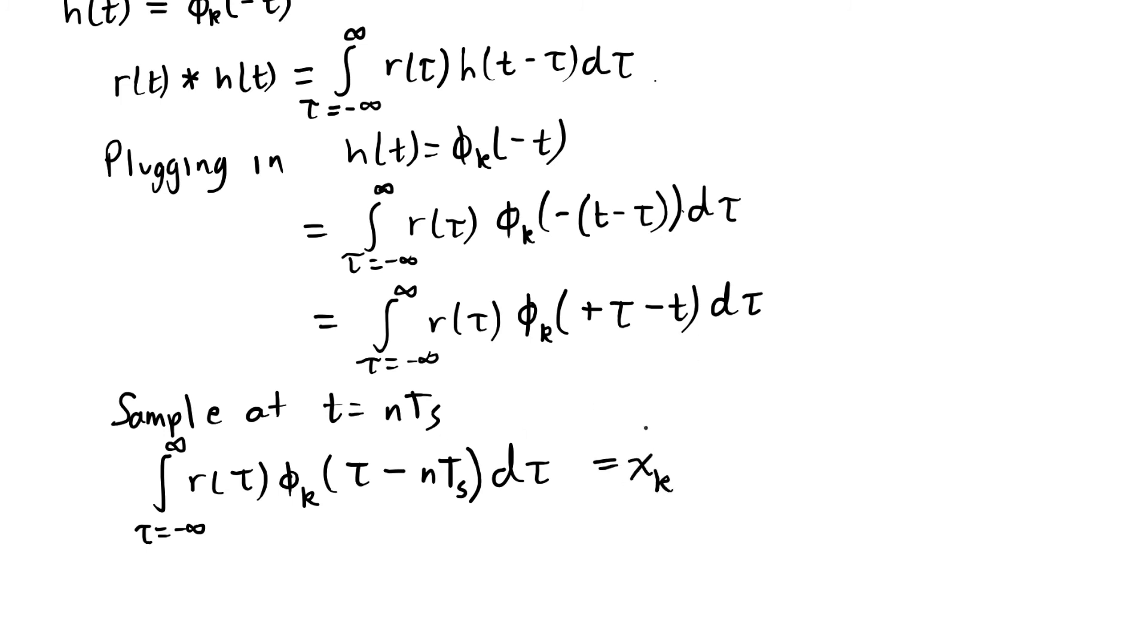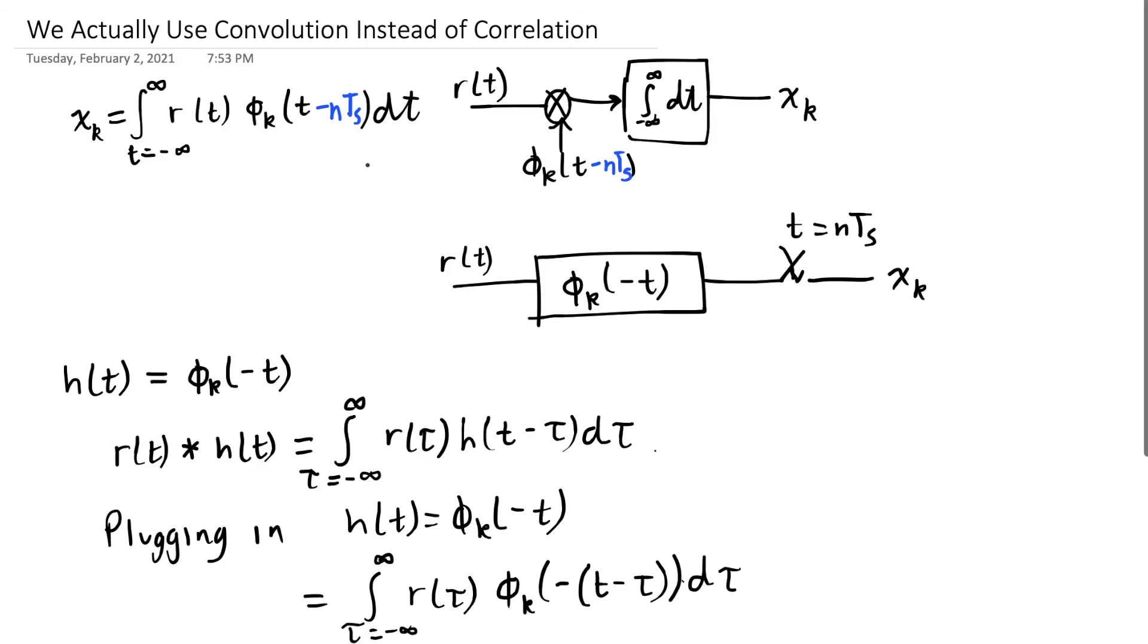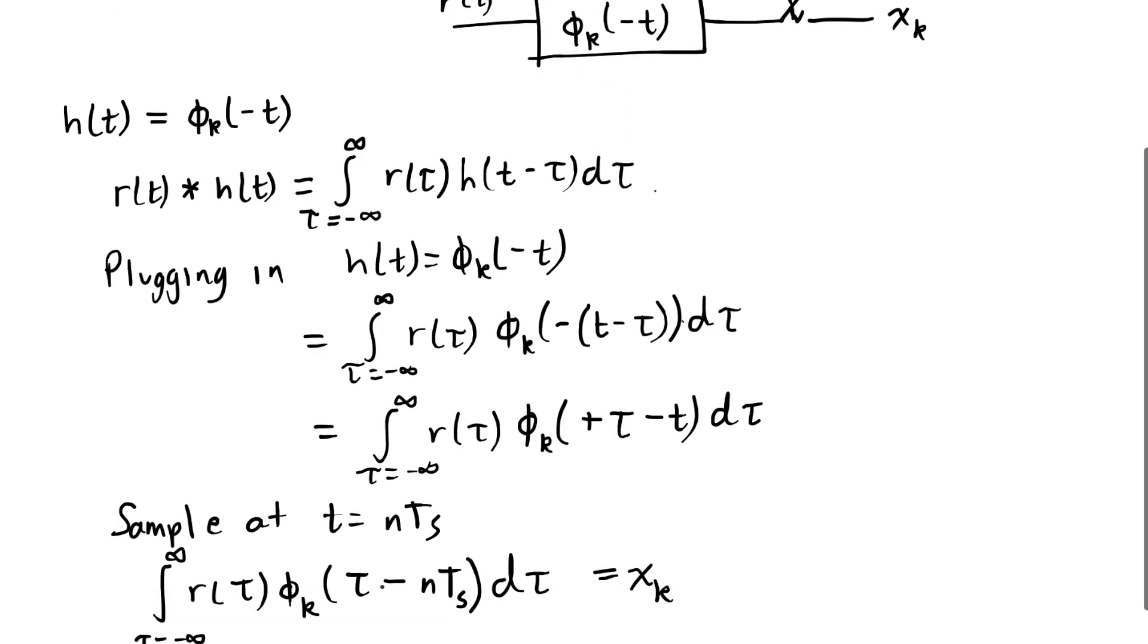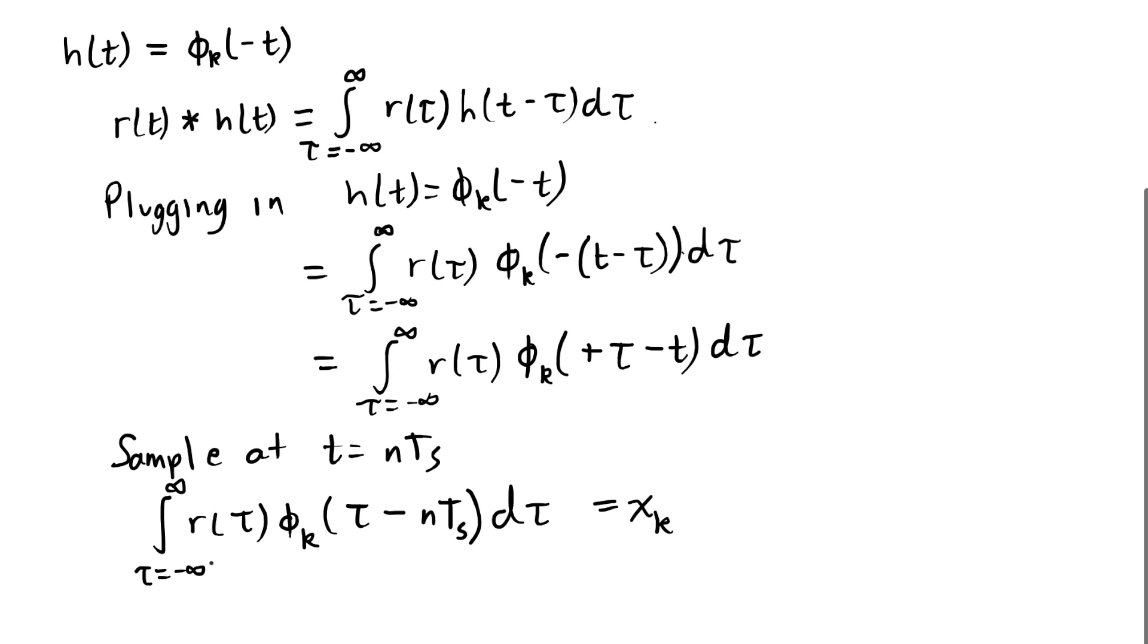Well, is this equivalent to this expression here? Yes, in fact it is, because all that's changed is our dummy variable has changed from t to tau. That's going to integrate out and we're going to be left with something that is a function of integer n. At every new time n, we're going to have a new value of x sub k.